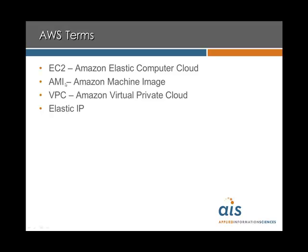Next is an AMI, which is an Amazon Machine Image. This is a virtual machine — an image of a virtual machine that runs inside of your server, your EC2. The actual AMI refers to the image file, and when you start it up, that's an instance of that image running inside the server room.